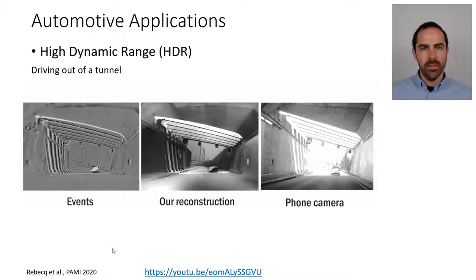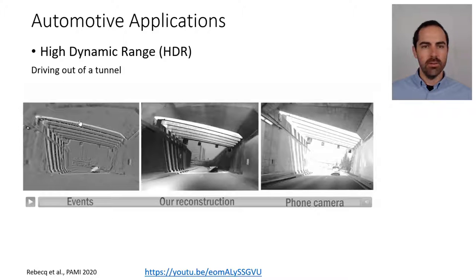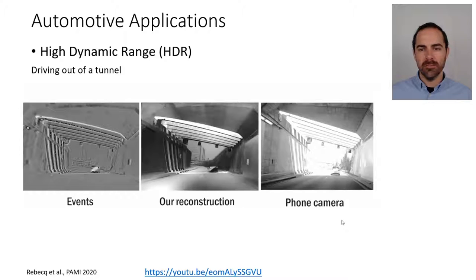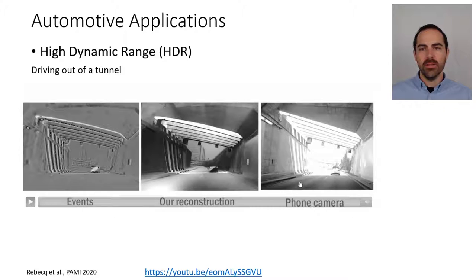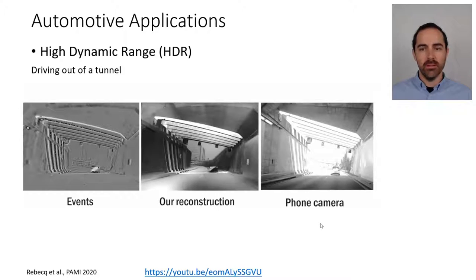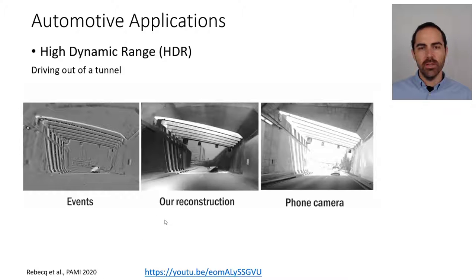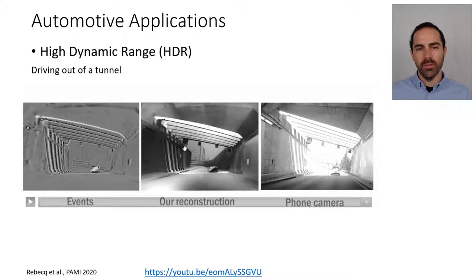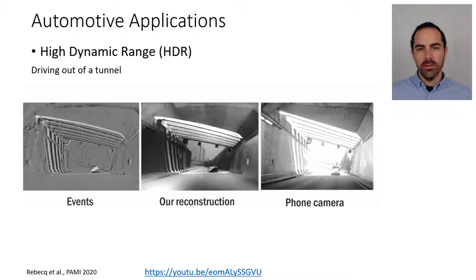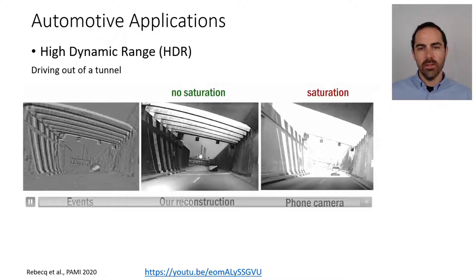This is another example of high dynamic range. On the left we have events: grayscale means no events, bright means positive events (brightness increase), and dark means negative events. On the right we see the output of a standard camera. This is a typical scene driving through a tunnel where inside is dark and outside is very bright — no single exposure time would allow a phone camera to capture both. What we see in the middle is the output of an algorithm that takes events as input and reconstructs a brightness signal consistent with the events. This is a very recent paper using a neural network to produce an image from a group of events. It's quite a good result: you can see both inside the tunnel and outside with no saturation.